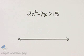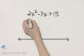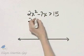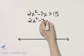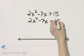To do so, first of all, write down the related equation. That would be 2x squared minus 7x is equal to 15.